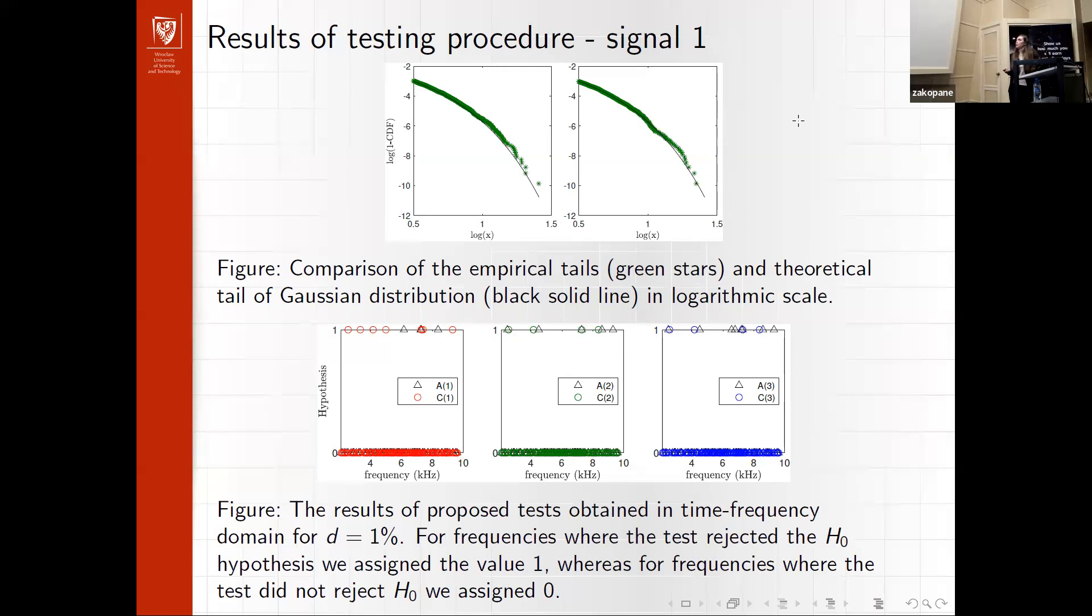Moreover, we wanted to compare the empirical tails of our distribution and theoretical Gaussian distribution. We also tested to see if this distribution is indeed Gaussian. In time representation, we obtained that this is a Gaussian distribution. This is the comparison of the tails, empirical and theoretical. In time-frequency domain, 0 represents not rejecting the null hypothesis, and 1 represents rejecting it. We can see that also in time-frequency representations for signal 1, basically all of the tests classified the signal as coming from finite variance distribution.